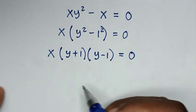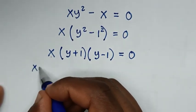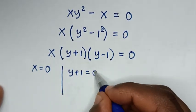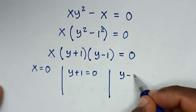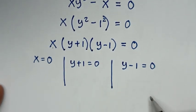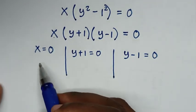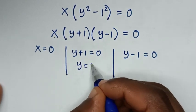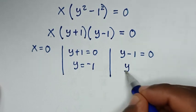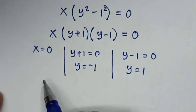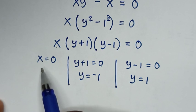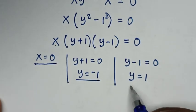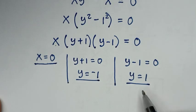From this factored equation, we have three possible solutions: x equal to 0, or y plus 1 equal to 0 giving y equal to negative 1, or y minus 1 equal to 0 giving y equal to 1.